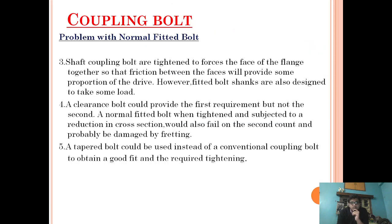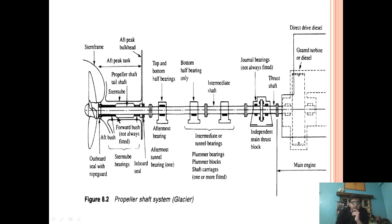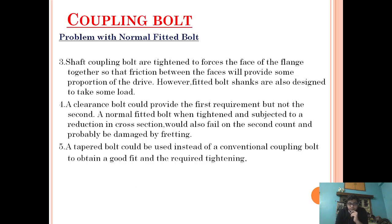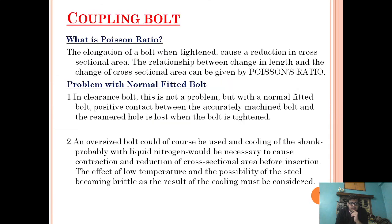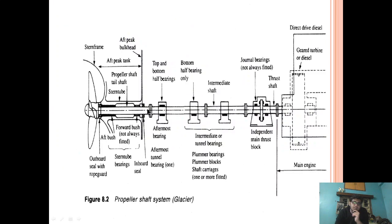If anybody asks you what a coupling bolt is, let me first show you where it is used. As you can see, this propeller is attached to the main engine via a shaft. This shaft is not continuous — it is intermediate. It is attached with the help of a flange, and this flange is attached with the help of a bolt. This bolt is called the coupling bolt.